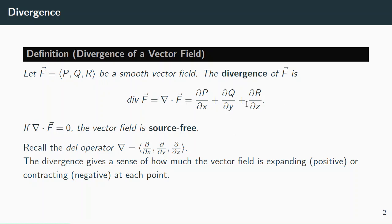The divergence is a number, or a function if you want to think of it that way. You start with a vector field, but it spits out a number — it's just telling you whether fluid is being created, destroyed, or neither. When you get zero, then the vector field is said to be source free.